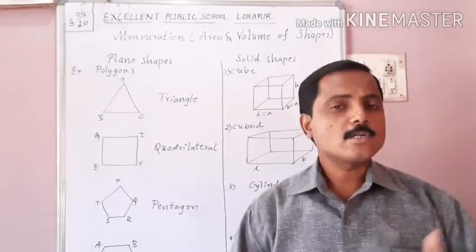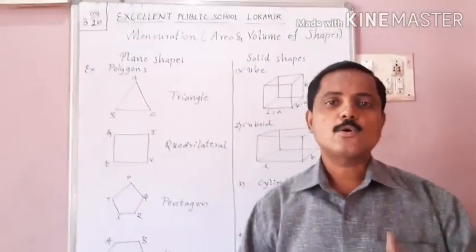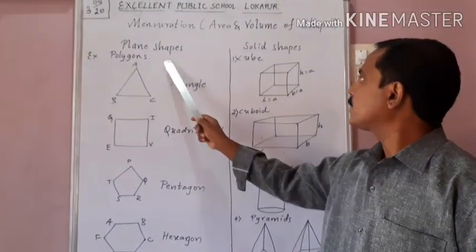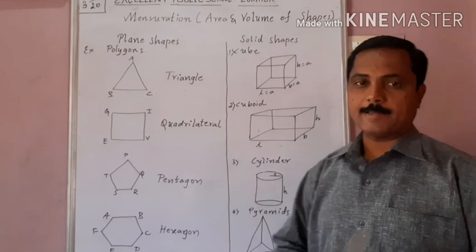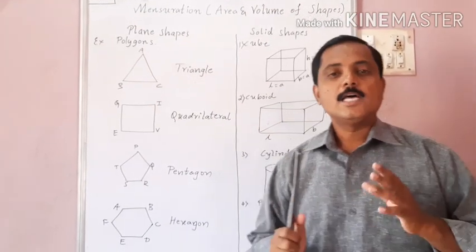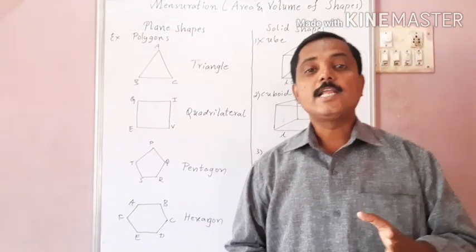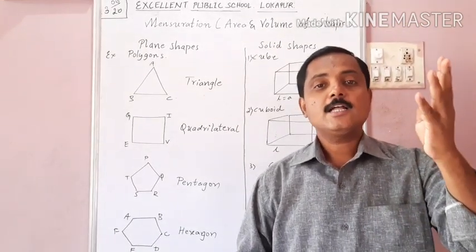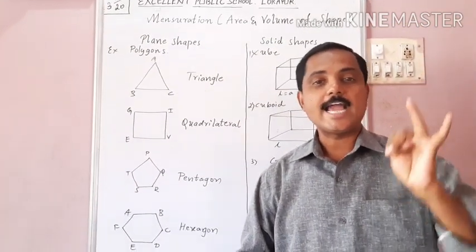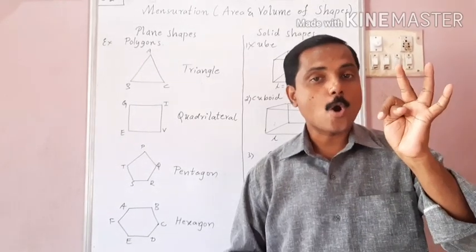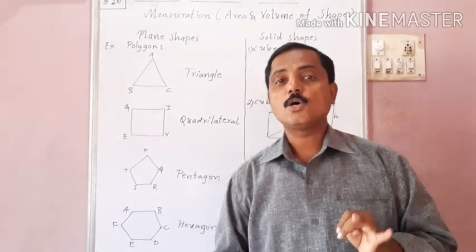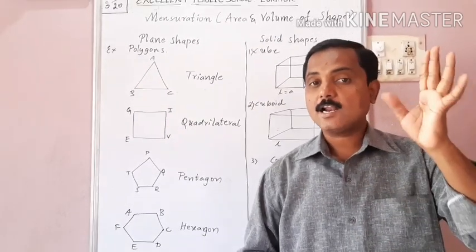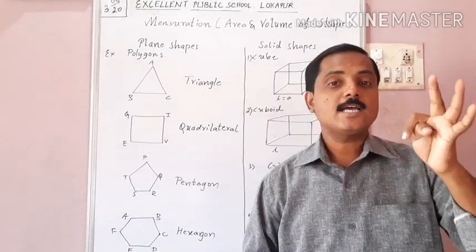From our surroundings, we have two types of shapes: plain shapes and solid shapes. There are three basic dimensions: length, breadth, and height. Height is also called width.